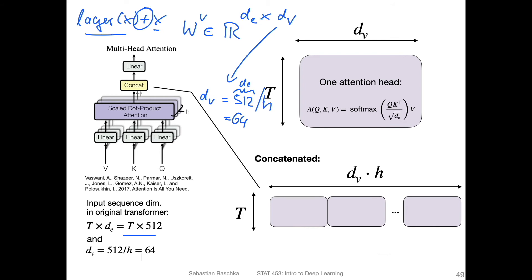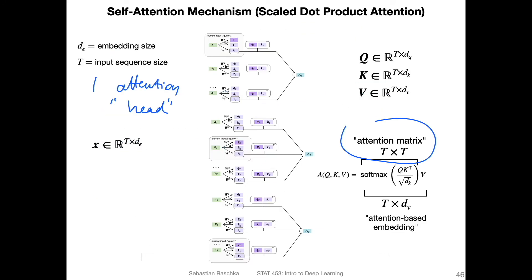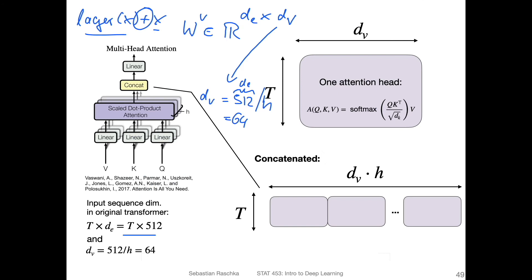So the concatenation here is we have done the scaled dot product attention. If I go back here, the scaled dot product attention is T times dv dimensional, right? It's one scaled dot product attention. So one of these here is T times dv dimensional.